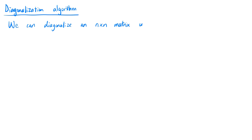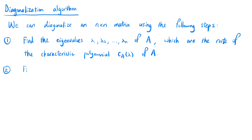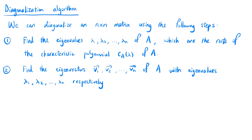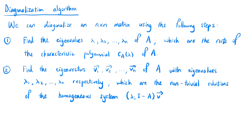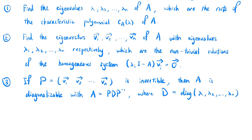We can now state the diagonalization algorithm. To diagonalize an n by n matrix, the first step is to find the eigenvalues λ1, λ2 up to λn of A, which are the roots of the characteristic polynomial CA(λ). The second step is to find the eigenvectors v1, v2 up to vn with eigenvalues λ1, λ2 up to λn respectively, which are the non-trivial solutions of the homogeneous system (λi I minus A) times V equals 0. Thirdly, if P is the matrix with columns v1, v2 up to vn and P is invertible, then A is diagonalizable with A equals P times D times P inverse, where D is the diagonal matrix with diagonal entries λ1, λ2 up to λn.